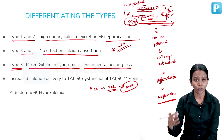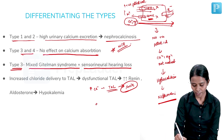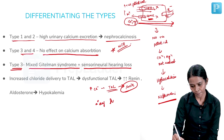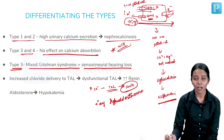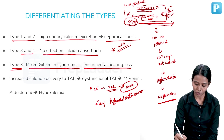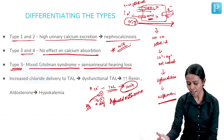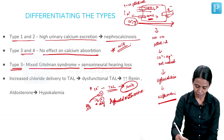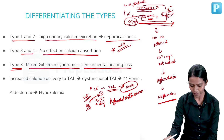Since a lot of fluid is lost, the body senses volume depletion, leading to secondary hyperaldosteronism via the renin-angiotensin-aldosterone system. Before aldosterone is activated, prostaglandins also get activated, which stimulate renin release as part of tubuloglomerular feedback or due to hypovolemia.